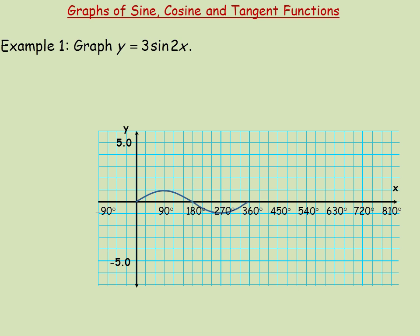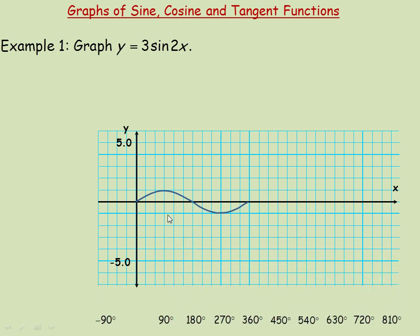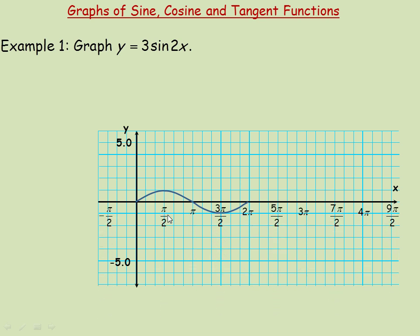We're going to do all of these in radians. What's on the x-axis right now is all these angles in degrees, so I'm going to take those off and put the equivalent angles in radians. For example, there was 90 degrees here, which is the same as pi over 2. There was 180 degrees here, which is the same as pi radians.